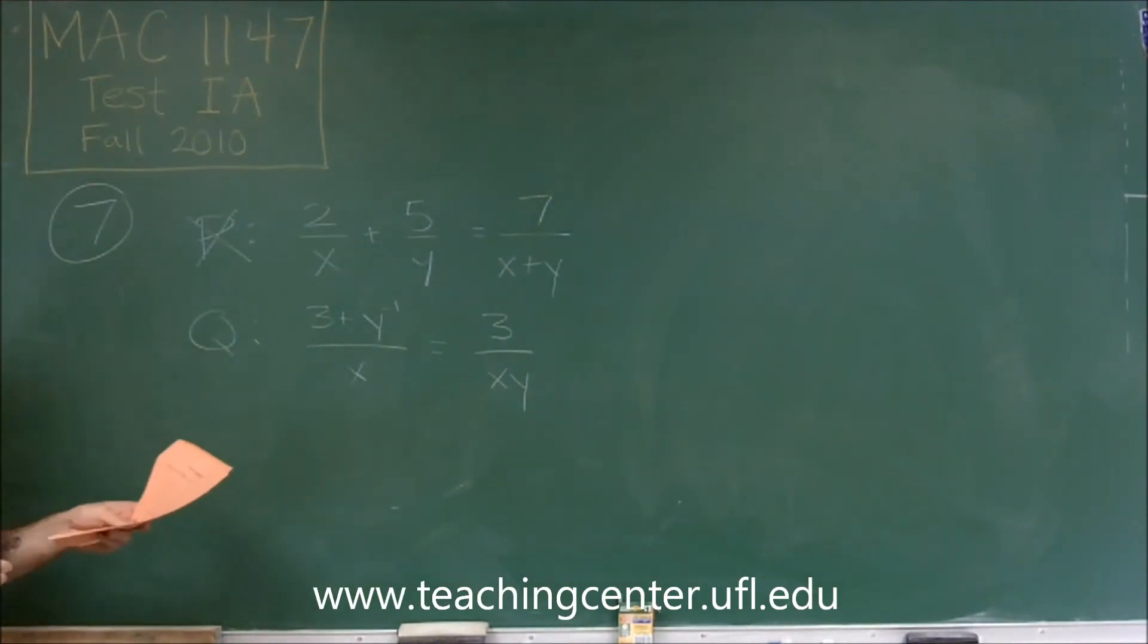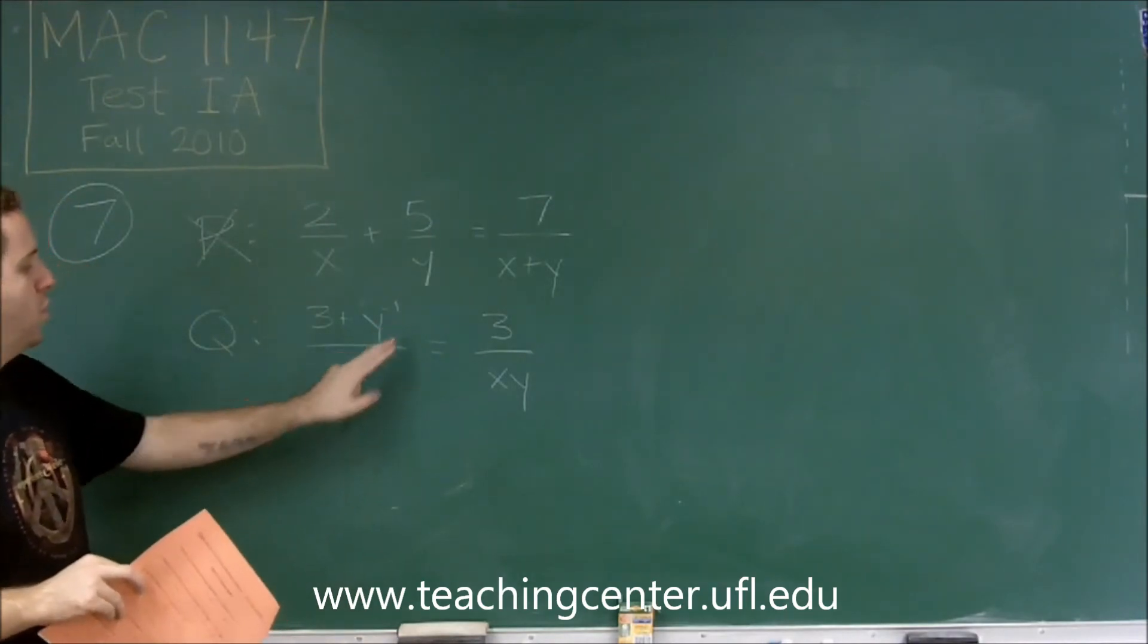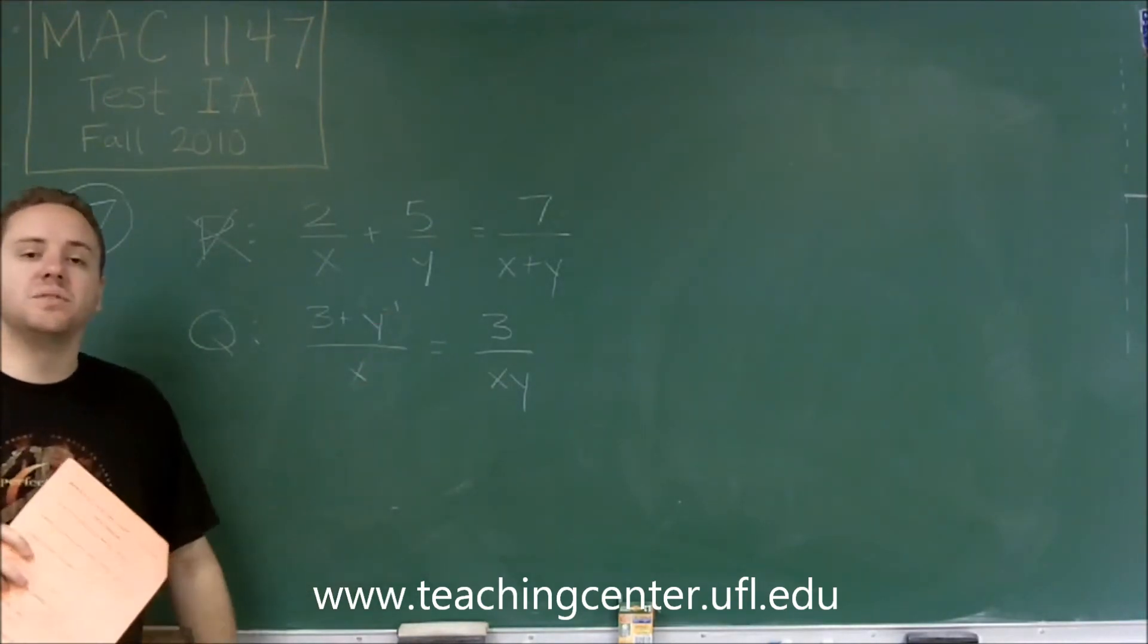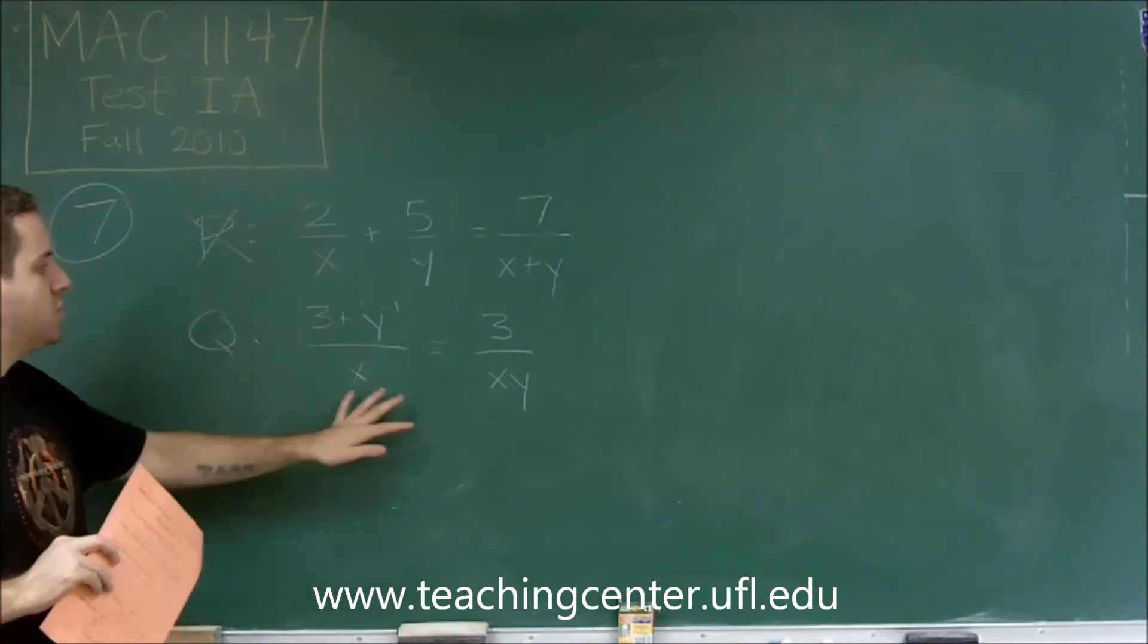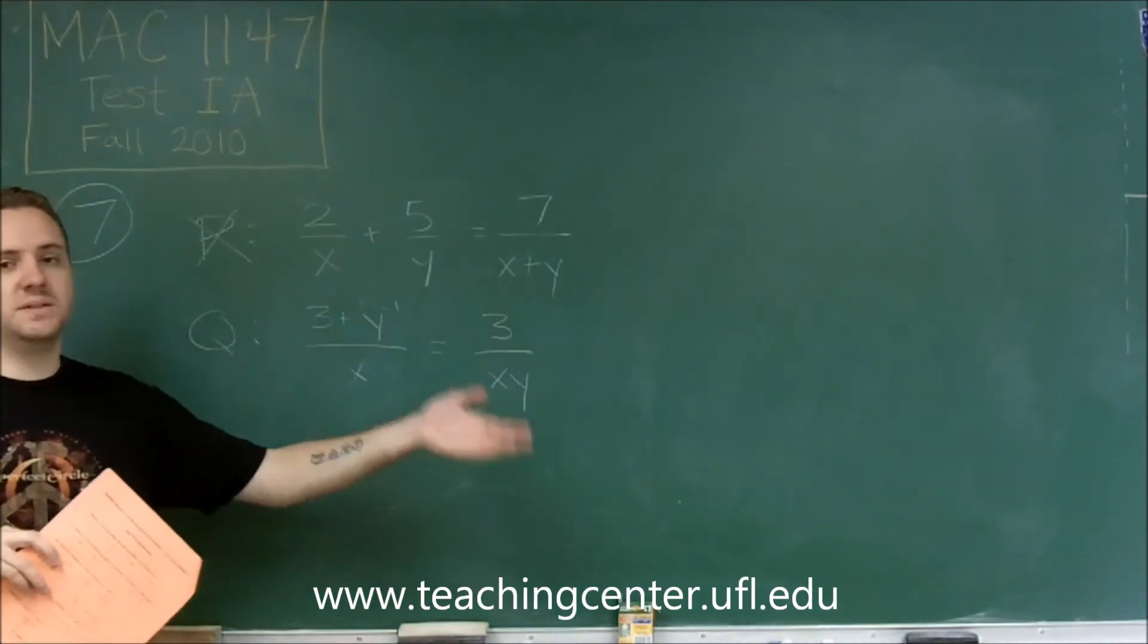For this one, this y to the negative 1 was brought down to the denominator because you have a negative 1 power. This would be true if this was 3 times y to the negative 1 because then you could just move it down.